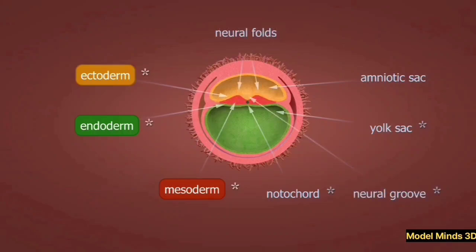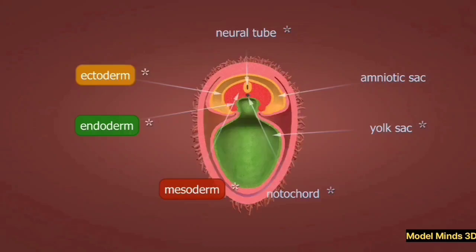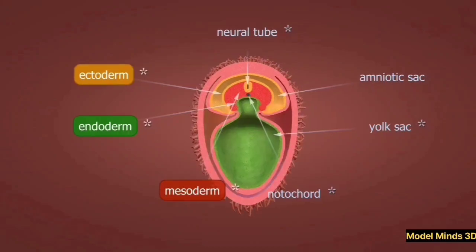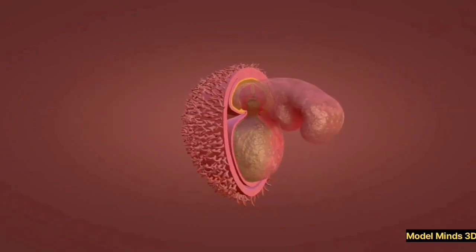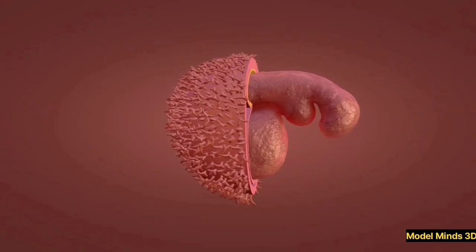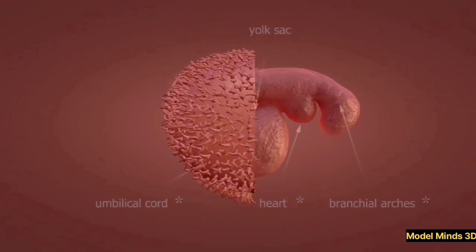During the embryonic stage, the embryo develops three primary layers: the ectoderm, which forms the skin and nervous system; the mesoderm, which will become muscles, bones, and the circulatory system; and the endoderm, which forms internal organs like the liver and lungs.